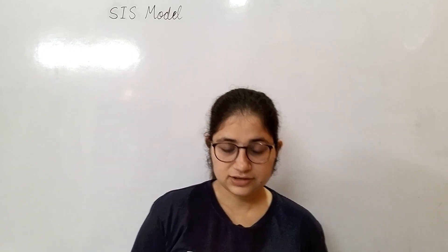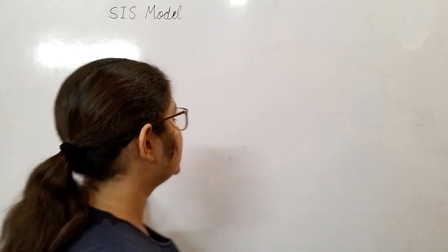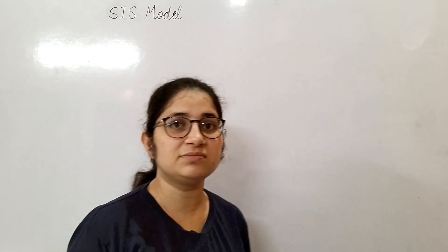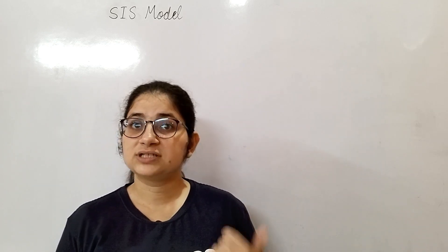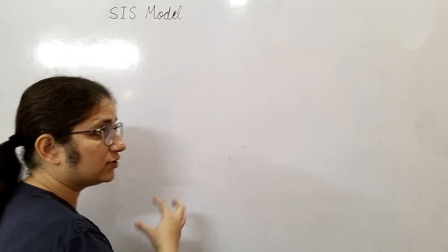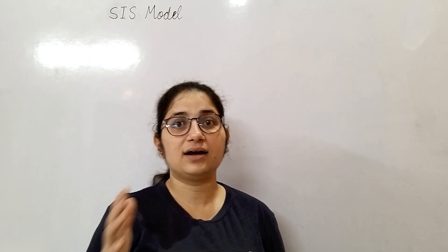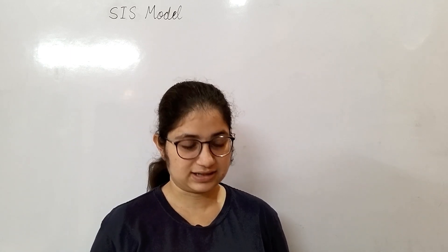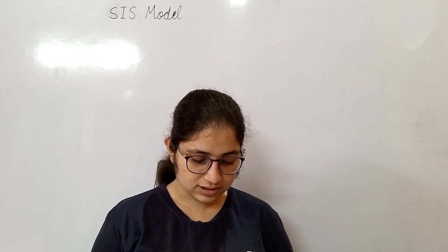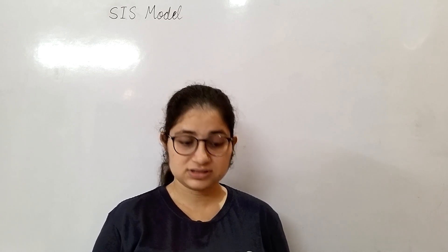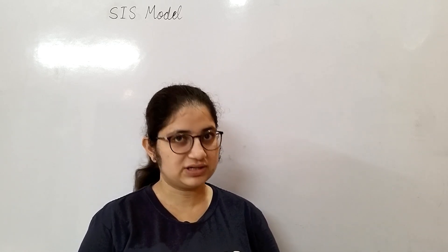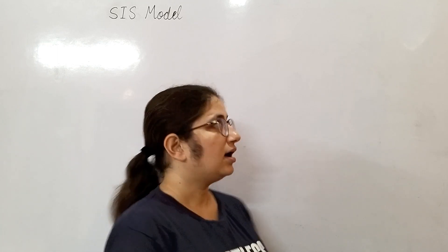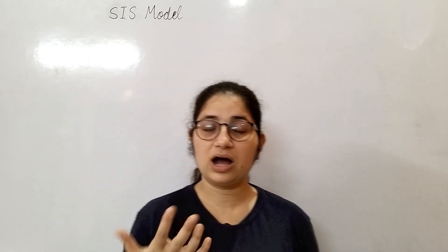Welcome back students. In the last video we did a simple epidemic model, and in today's class we are going to proceed with the SIS model. SIS model means: firstly you have some susceptibles, those susceptibles become infected, and those infected will again become susceptible after recovering. After knowing the rates, we set up differential equations and integrate them to find how many people are infected. In the end, you will find that all people are infected.